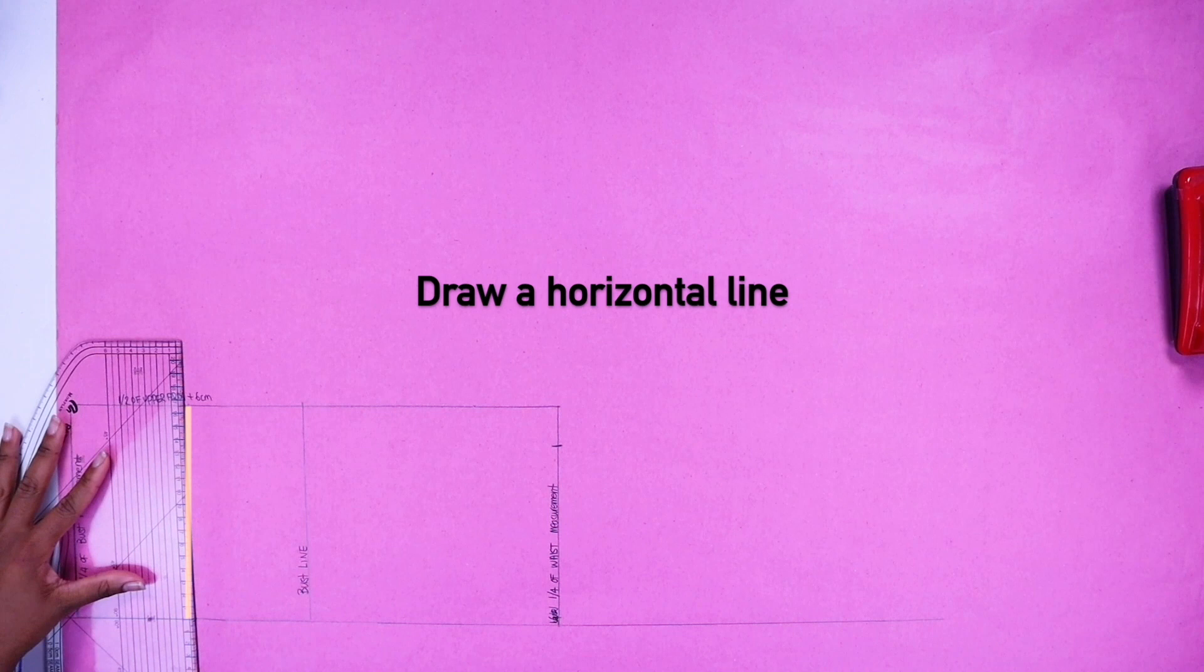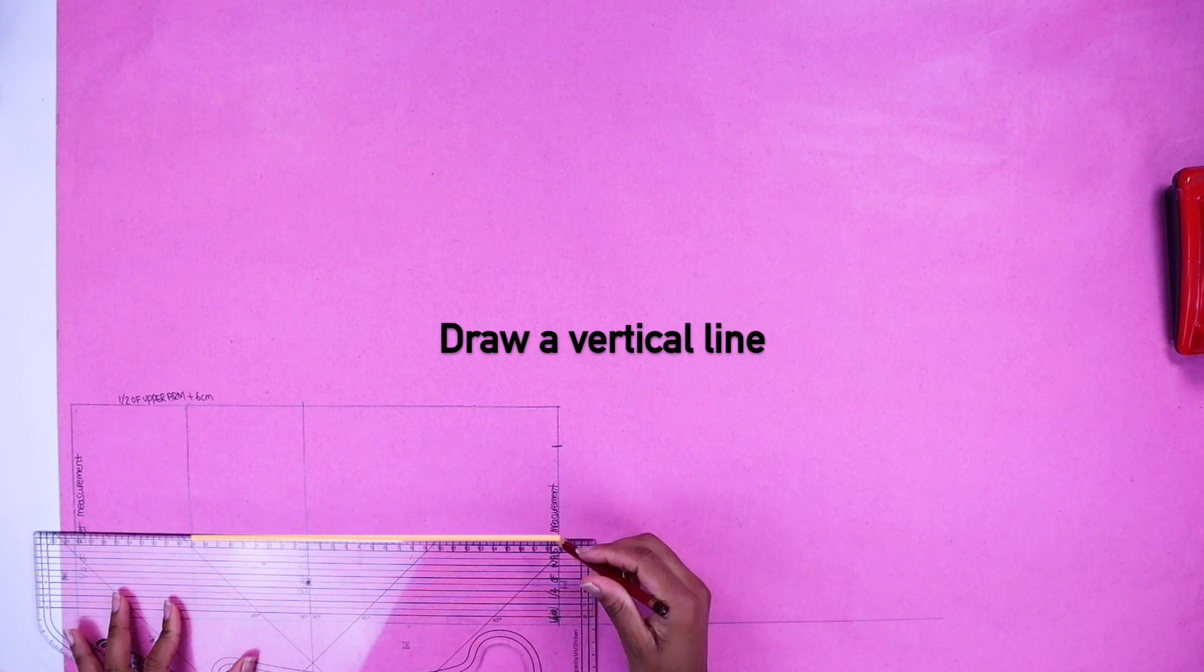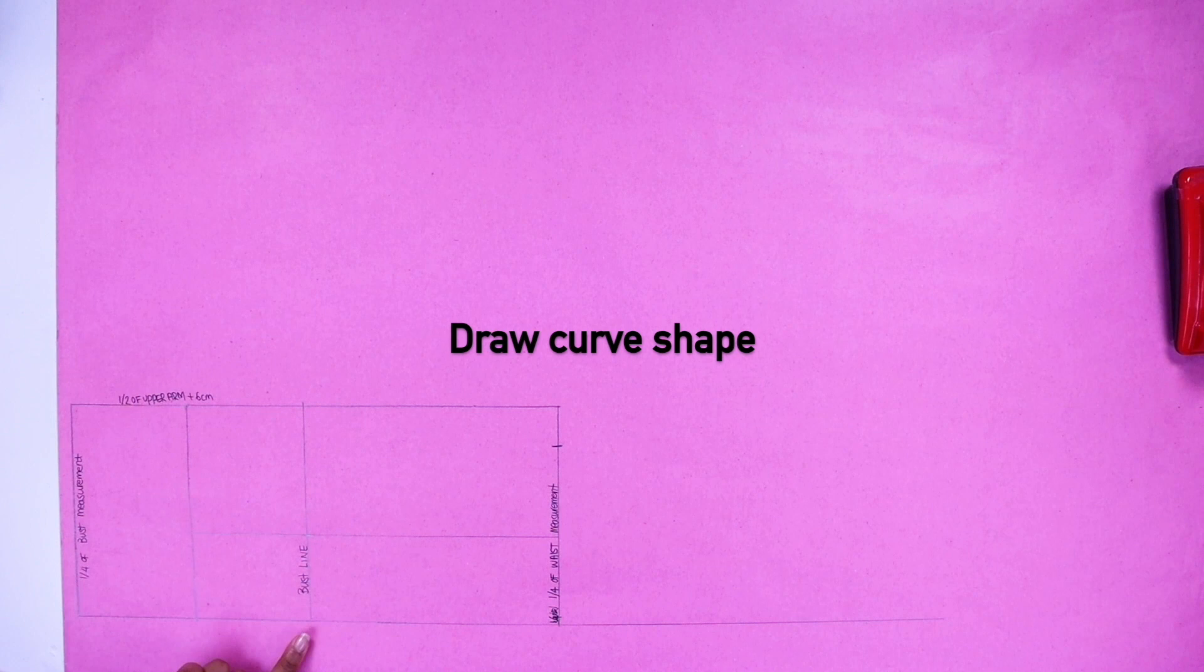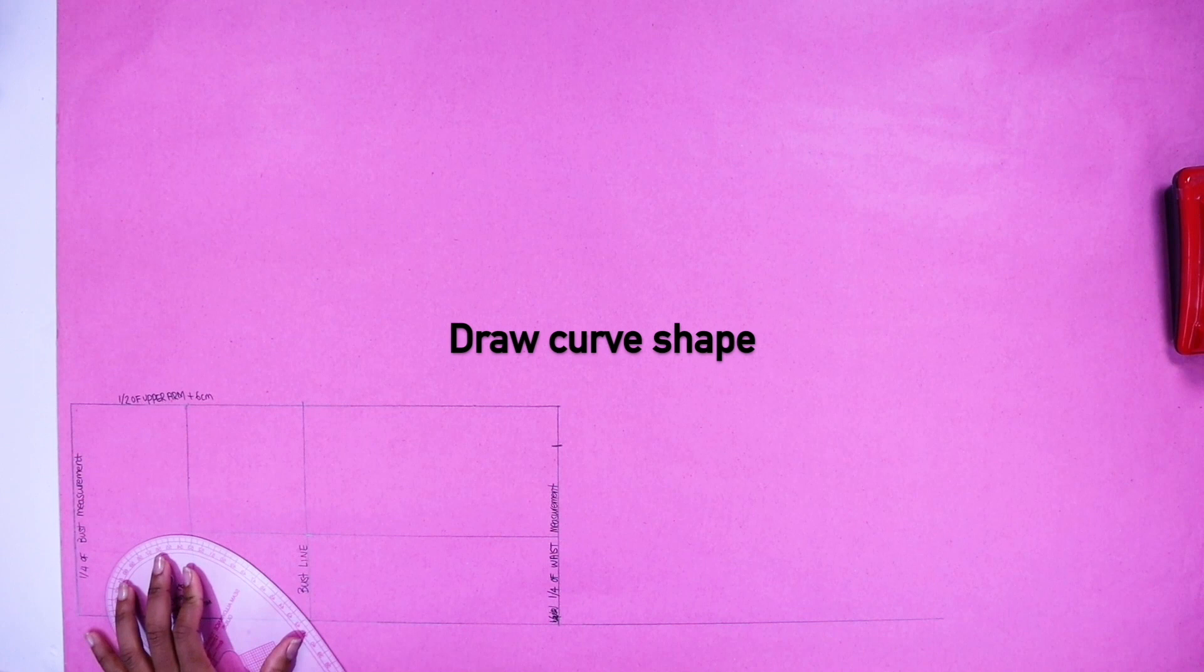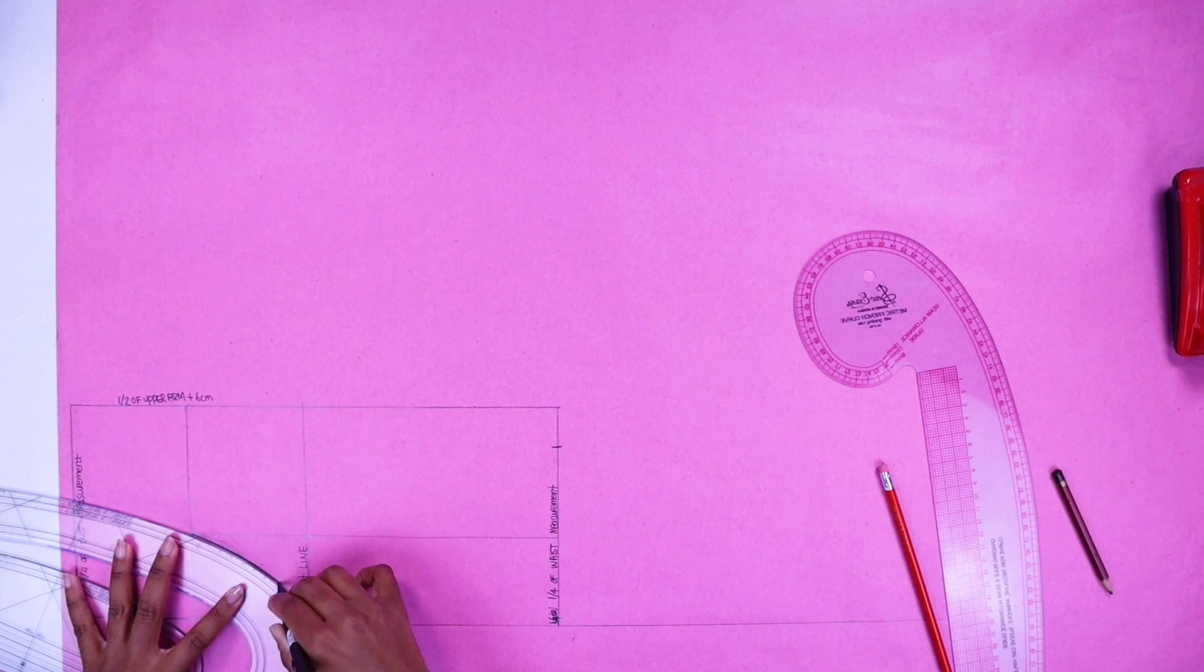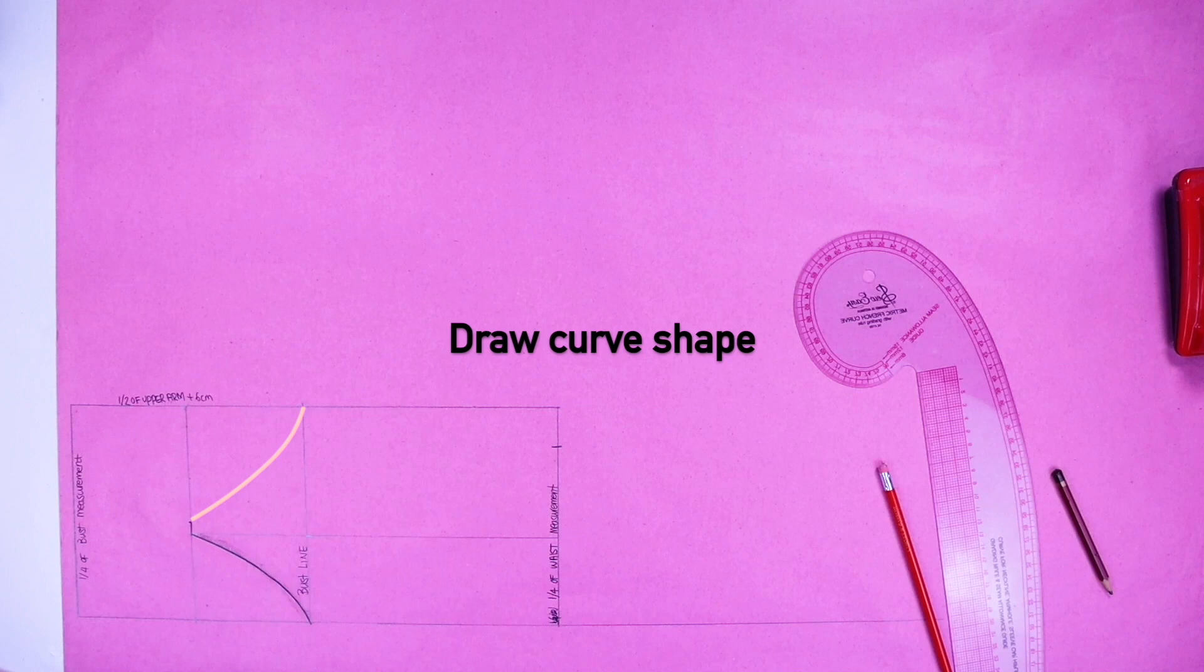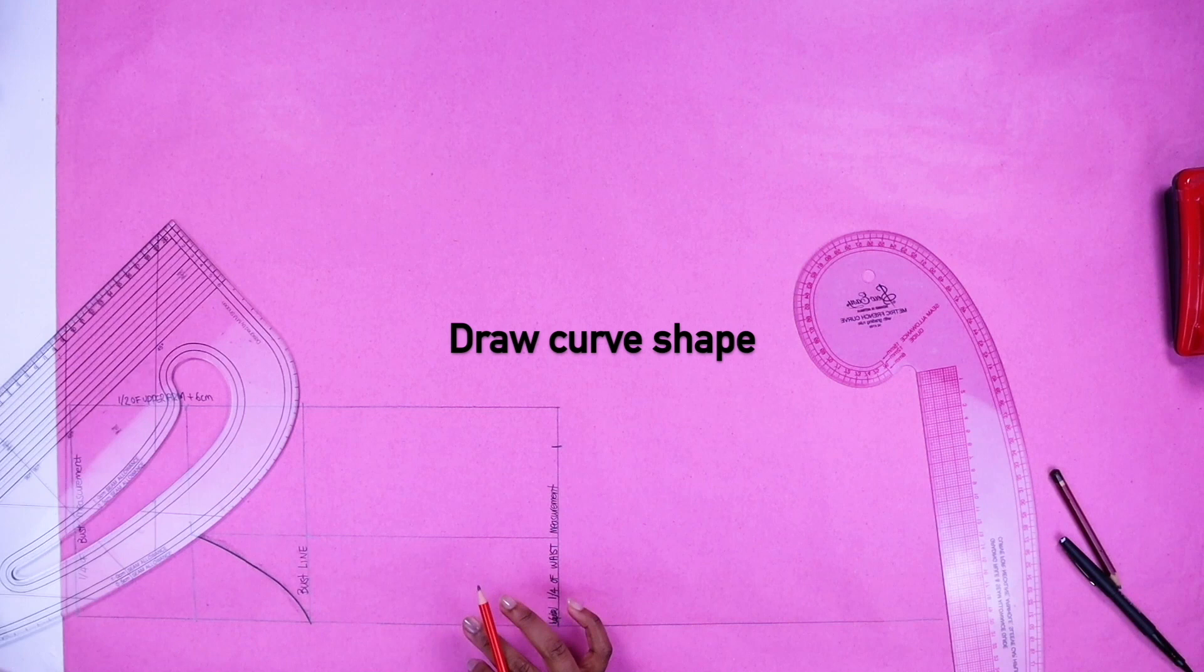Now from this point mark one half of your bust separation and draw vertical line. Now do your curve, find a good position in your ruler and just draw the curves. Next mark out one centimeter. Draw your curve shape. If you have this master ruler or any other pattern making ruler, it's going to be very easy for you because those rulers, they're so amazing, I love them.